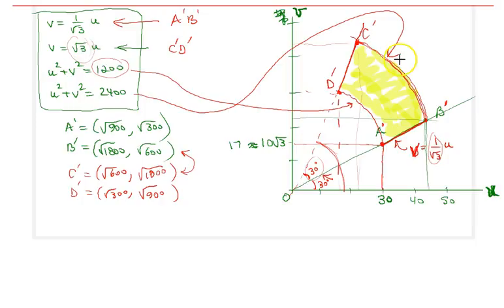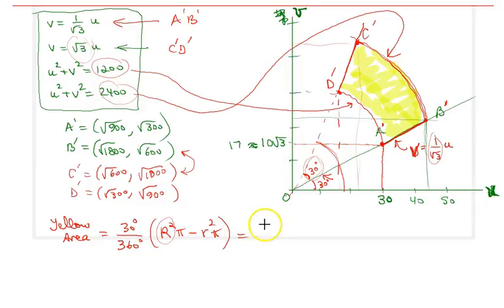So the yellow area will be equal to 30/360, which is 1/12 of the area between the two circles. So that's the square of the bigger circle, which is 2400. Therefore 1/12 times (2400π - 1200π).